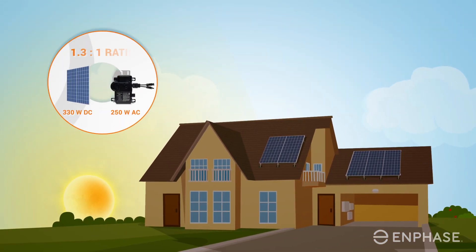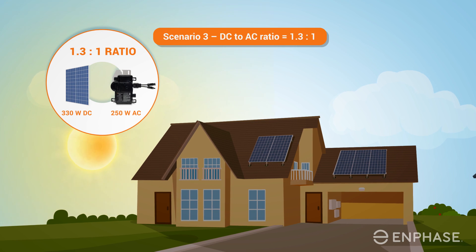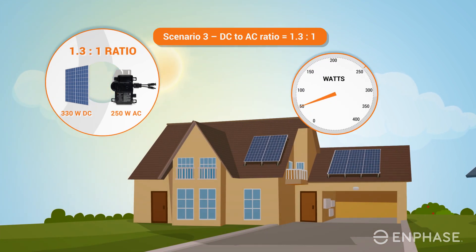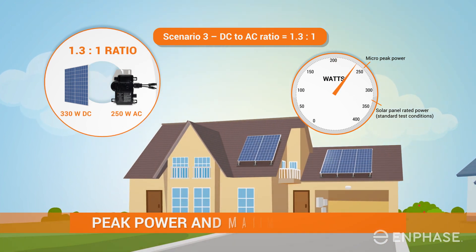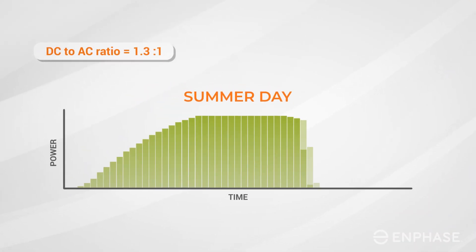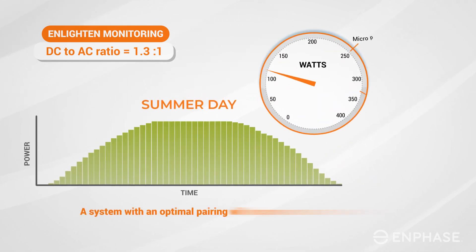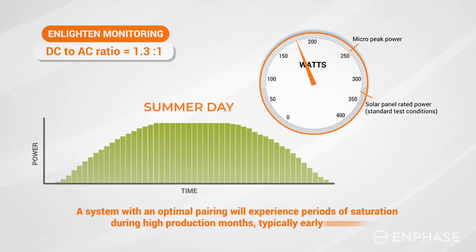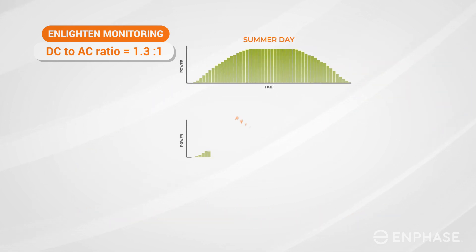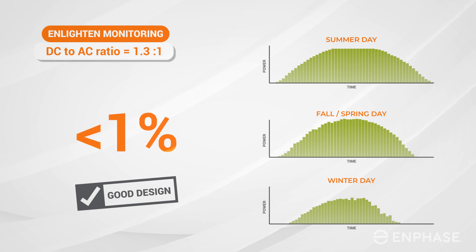Finally, we have an optimal pairing for the climate and other site characteristics like panel orientation and tilt. The DC to AC ratio is 1.3 to 1, and during the sunniest time of the year, the inverter periodically reaches its peak power and maximum potential. These periods of inverter saturation are represented in Enphase monitoring as a flat portion of the graph of a day's power output. A system with an optimal pairing will experience periods of saturation during high production months, typically early summer, while the rest of the year the peak power of the microinverter is not usually reached and there is little or no uncaptured energy. Computer modeling of this pairing tells us that less than 1% of potential energy production is not captured on an annual basis.